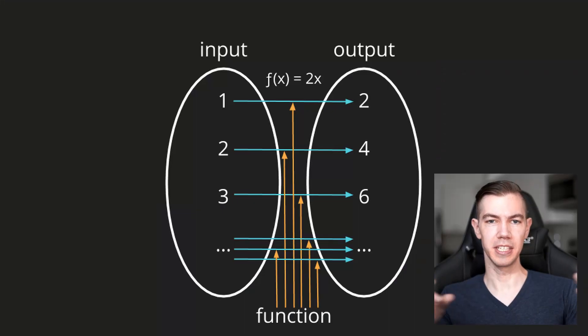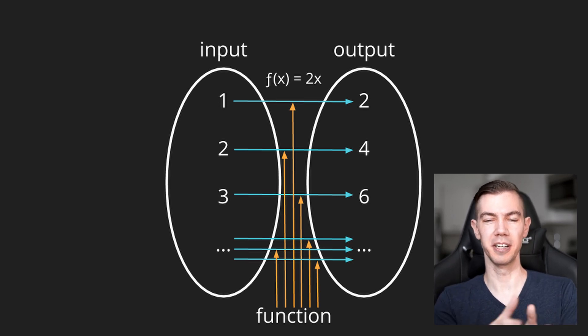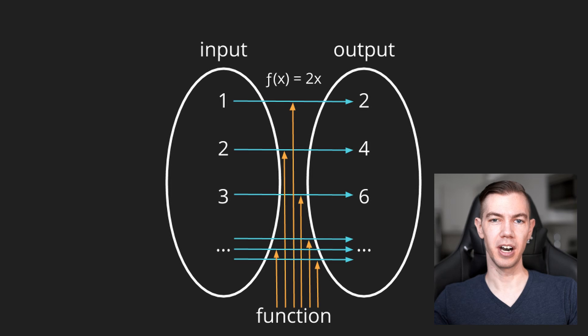Just to recap, here we have the set notation that I used back in my very first video where I talked about what functions are, where we have the set of inputs on the left that then map to each of the possible outputs on the right. The interesting thing you may have noticed is we're only handling a single input mapping to a single output in this case.